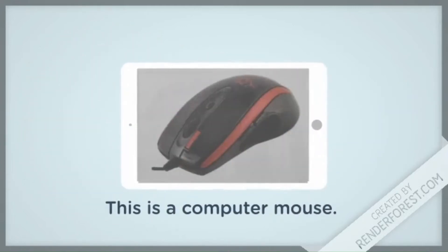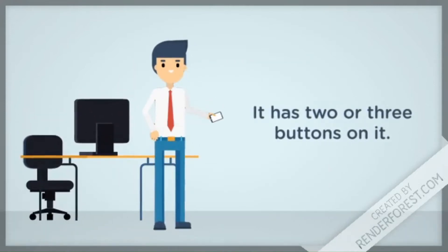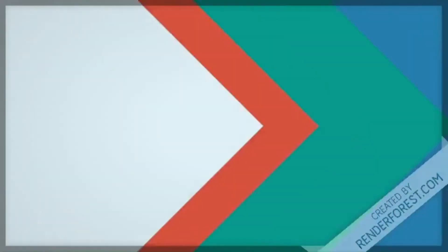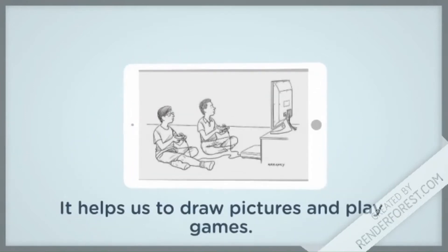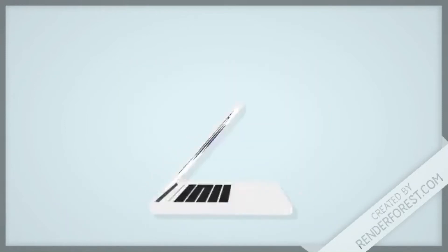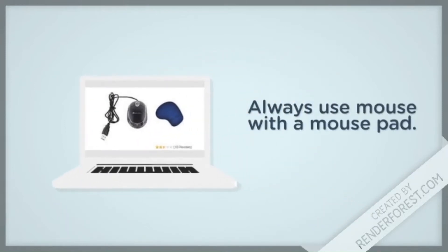This is a computer mouse. It has two or three buttons on it. It has a small ball which moves the mouse pointer on the screen. It helps us to draw pictures and play games. Always use the mouse with a mouse pad.